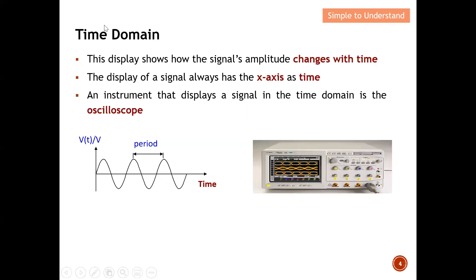Next, let's talk about time domain. This display shows how the signal amplitude changes with time. From this time domain diagram, I can see how the amplitude changes with time. At different time intervals, the voltage actually varies — this is what it means. How does a signal change with time? The display of a signal always has the x-axis as time when we talk about time domain.